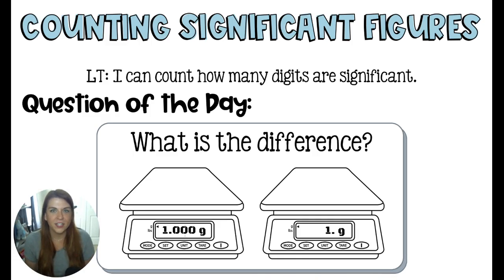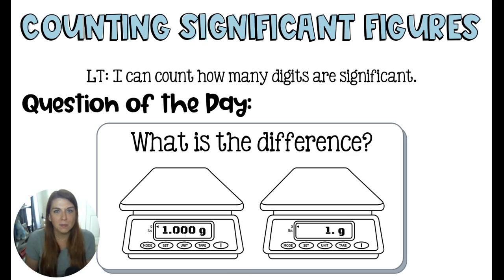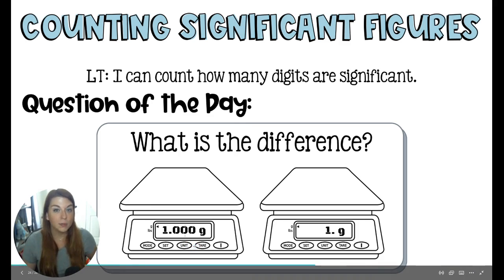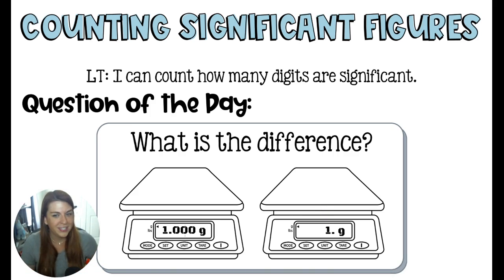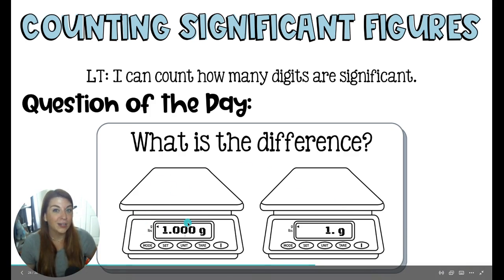Welcome to today's lesson on counting significant figures. What is the difference between these two balances? The difference is that one has a very high degree of precision — it measures to the thousandths place — and the second one only measures to the whole number. In your kitchen, a scale that goes to the whole number in grams is usually fine, but in a chemistry lab, you usually want some decimal places. The thousandths place means it's measuring individual milligrams, so this is a really good balance, probably a few hundred dollars, versus about $15 or $20. This is because it has a higher degree of precision.